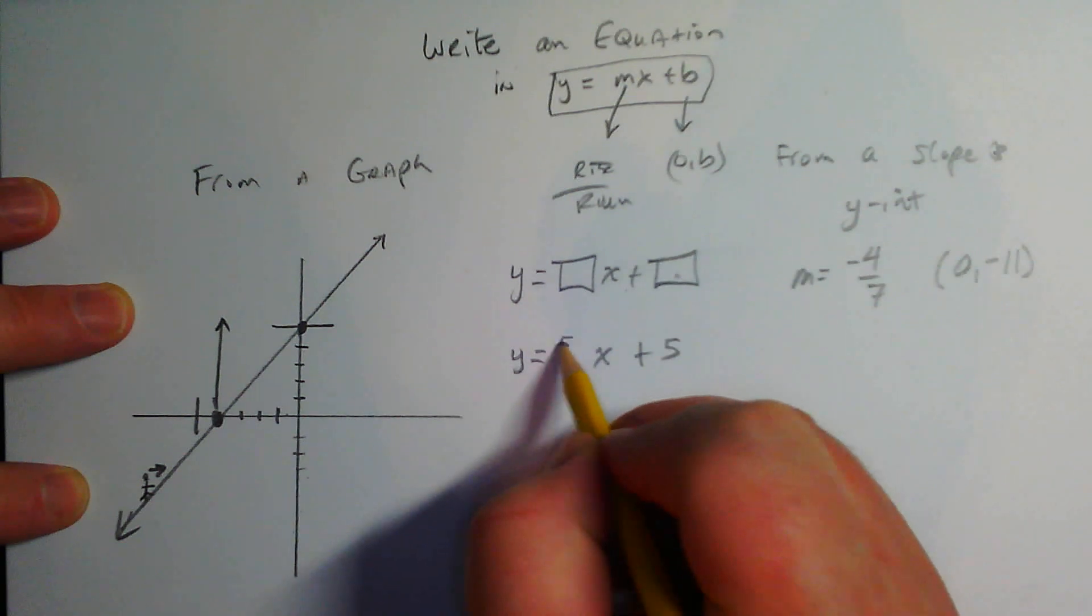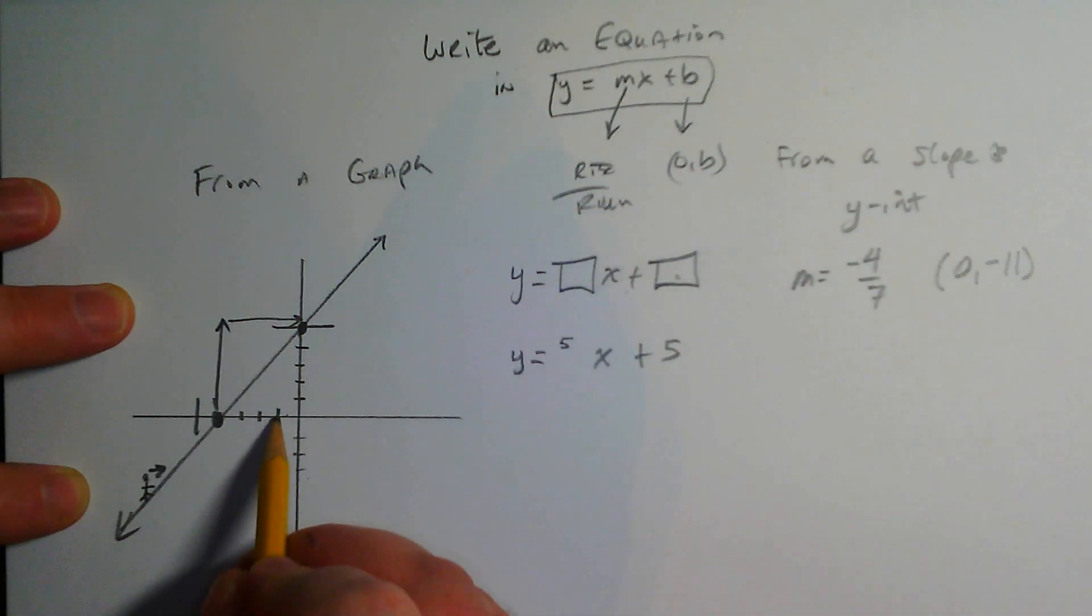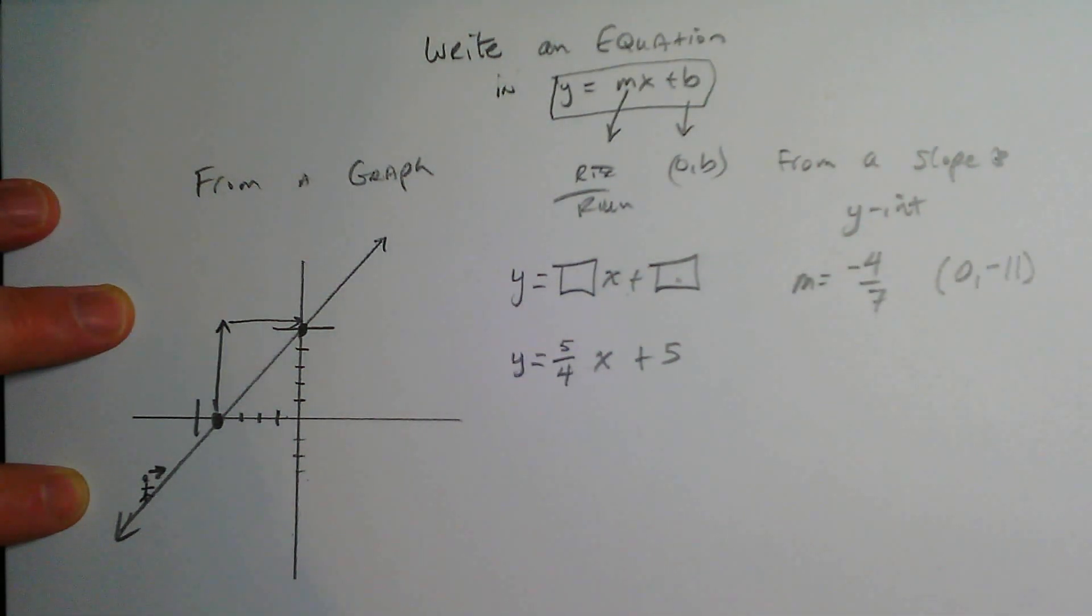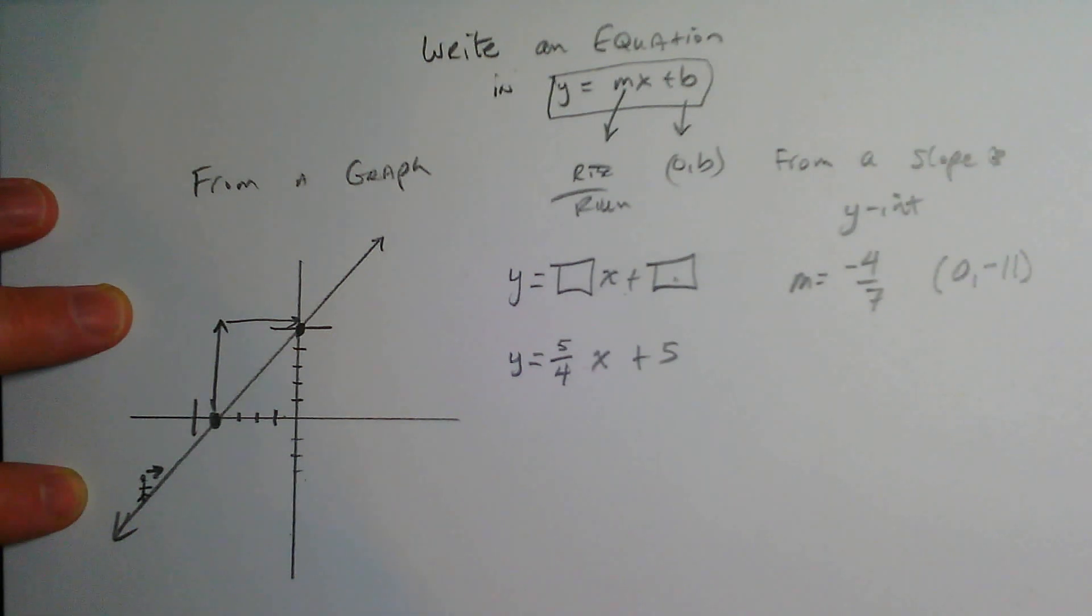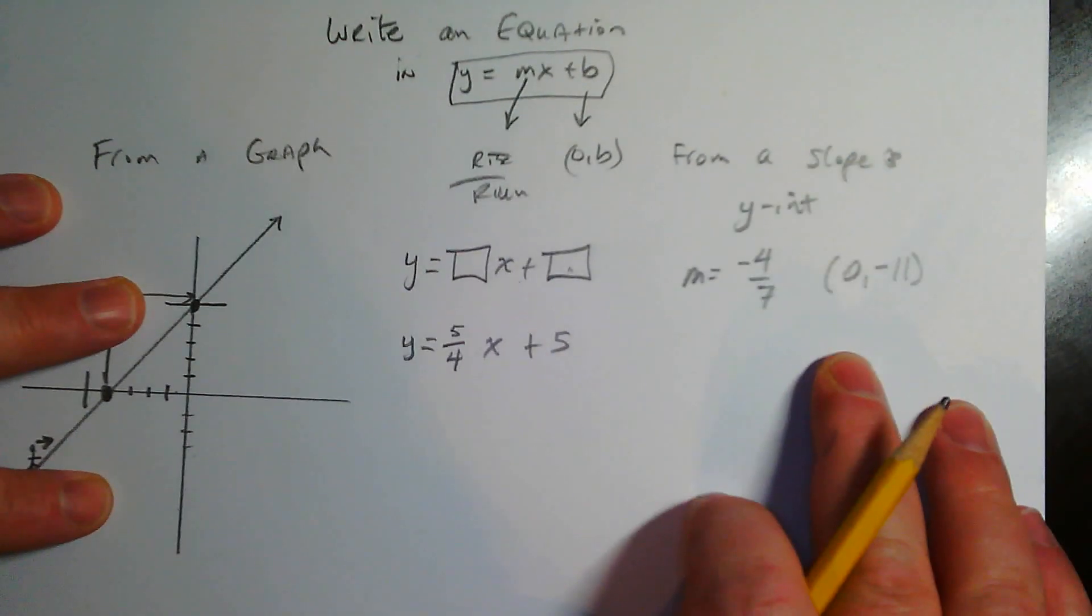...so the rise is five, and the run from there to there is one, two, three, four. There's our equation of our line: y equals five over four x plus five. Now let's say we...